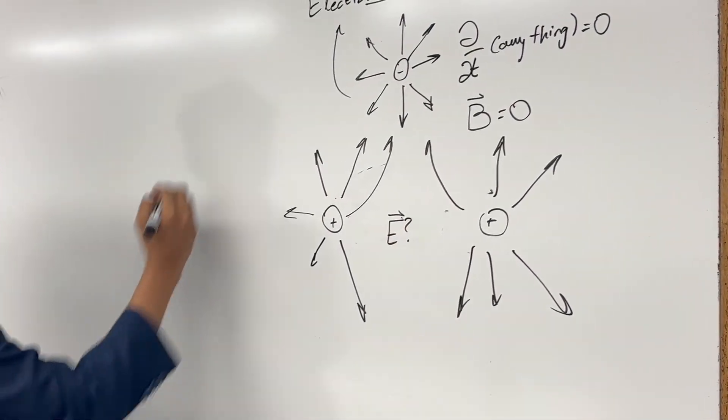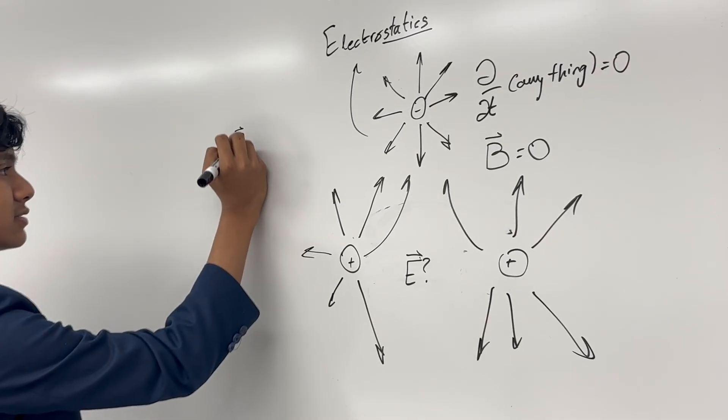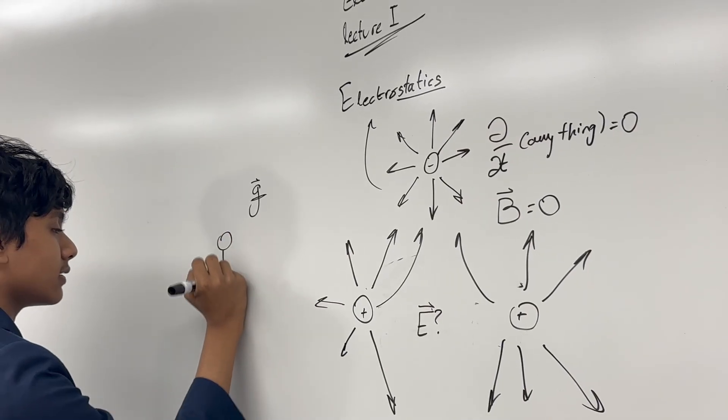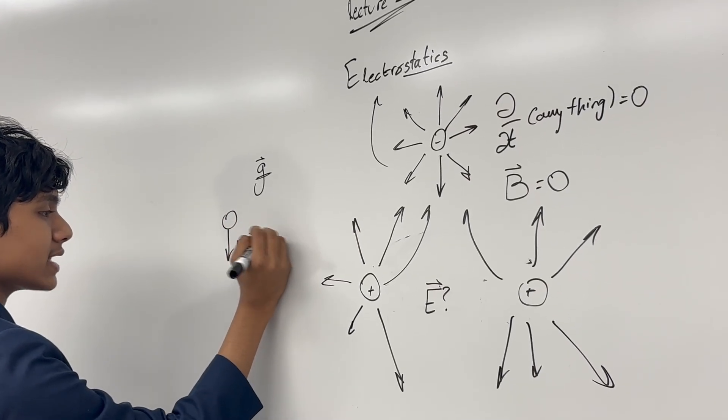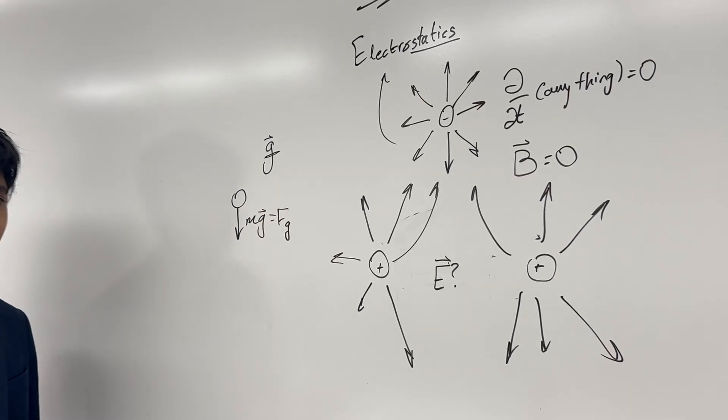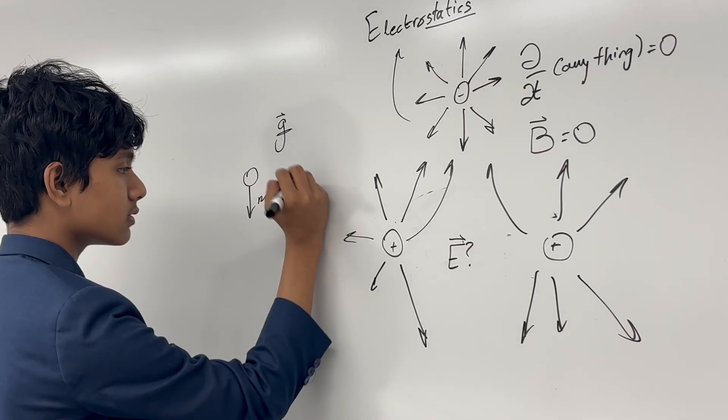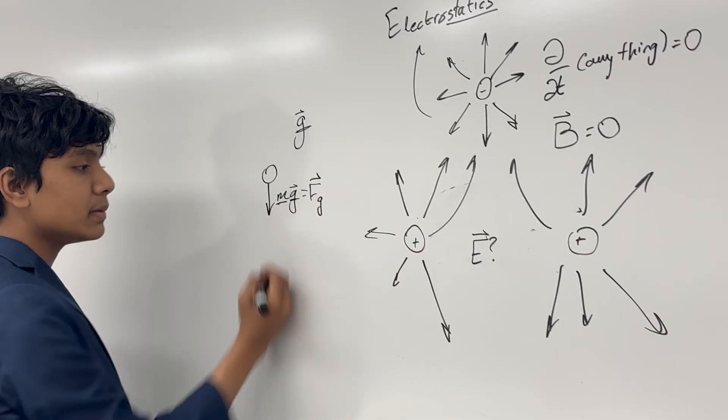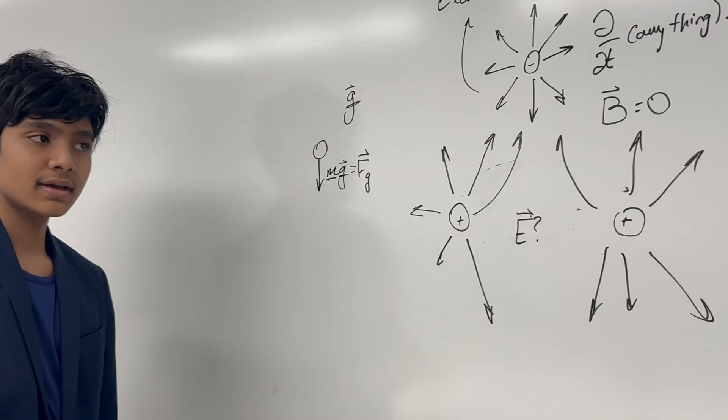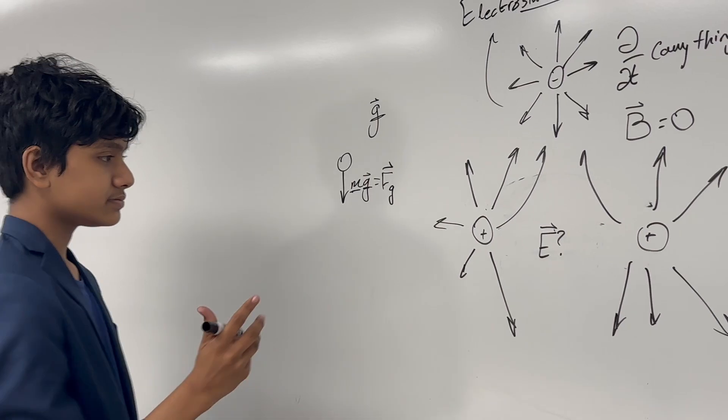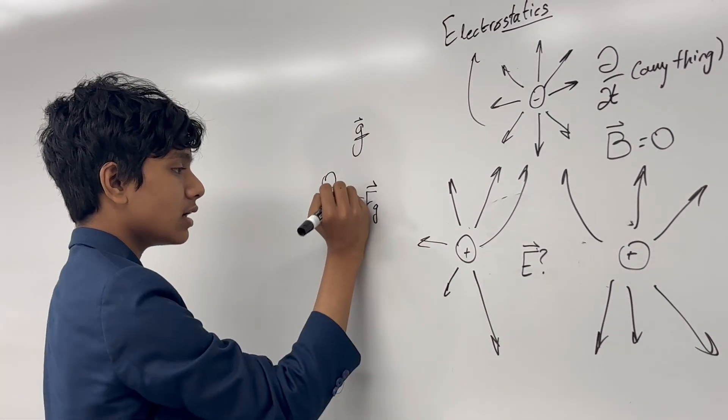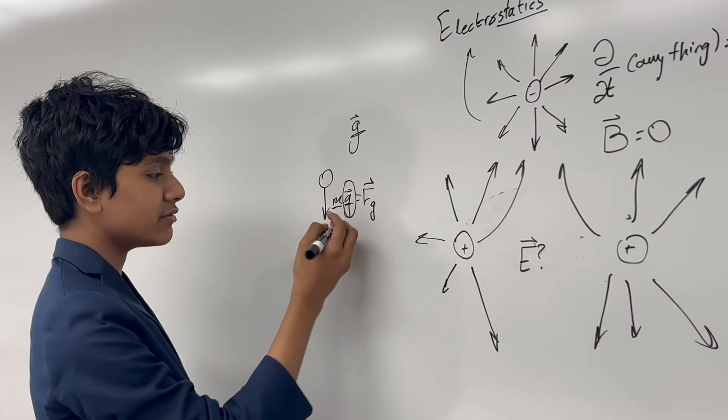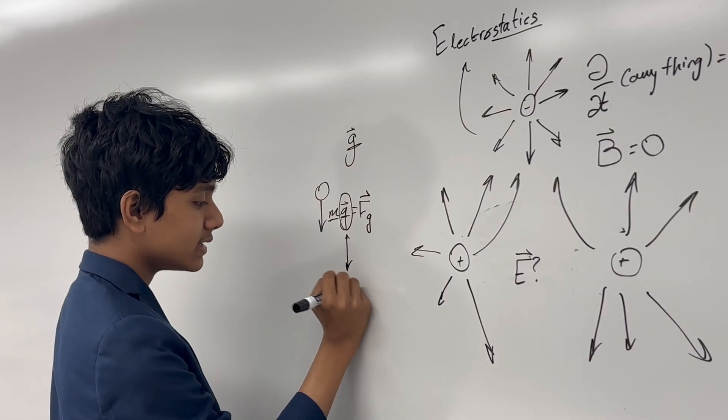You might remember gravitational fields exist. Well, you should remember, actually. In classical mechanics class, you usually have some force of gravity that's equivalent to the mass of the object it's acting on, multiplied by the strength of the gravitational field at that point. Now, the thing is, in electromagnetism, unlike in classical mechanics, this will pretty much be changing 24-7.